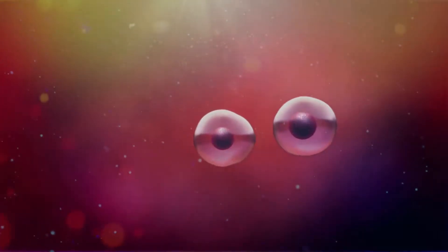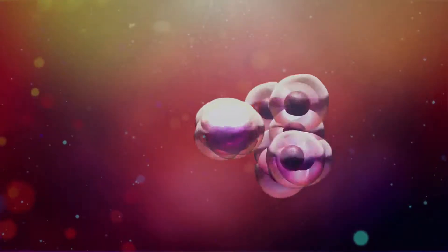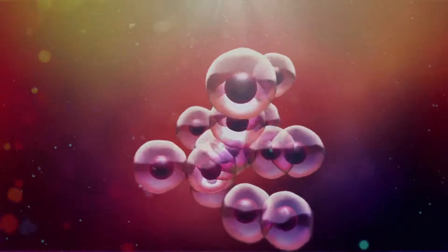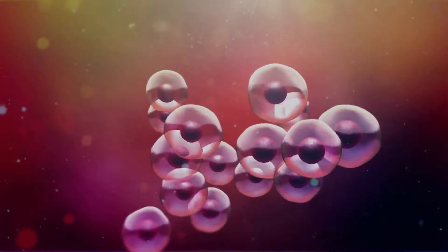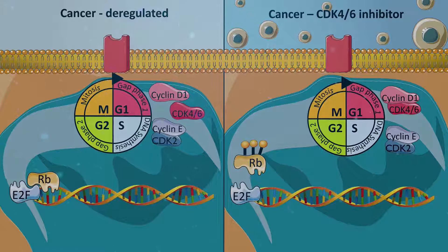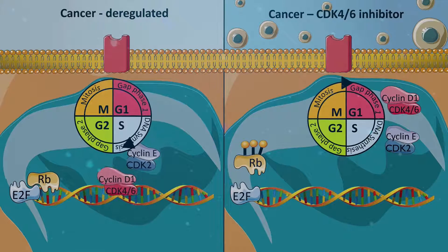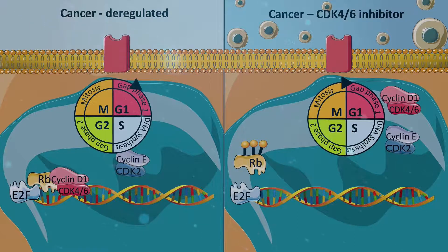In a normal healthy cell, the cell cycle is well controlled. In cancer, the cell cycle is dysregulated, causing cancer cells to proliferate at a faster rate. Cell cycle regulator cyclin D1 activates cyclin-dependent kinases such as CDK4-6, which have a pivotal role in the G1 to S phase transition in the cell cycle.